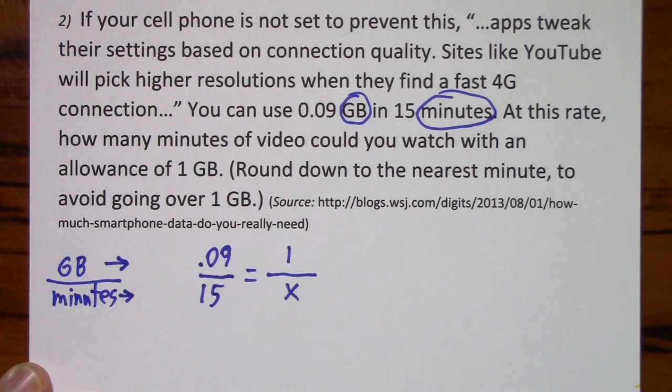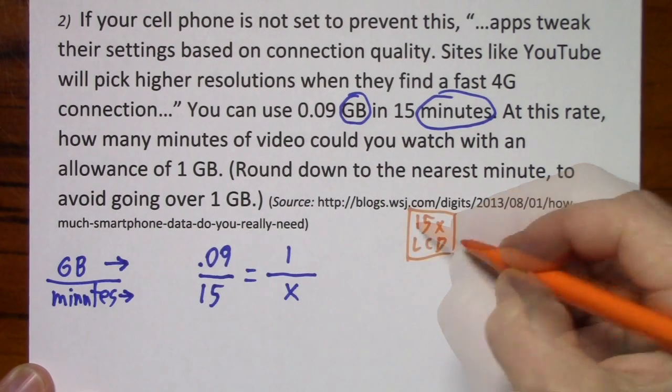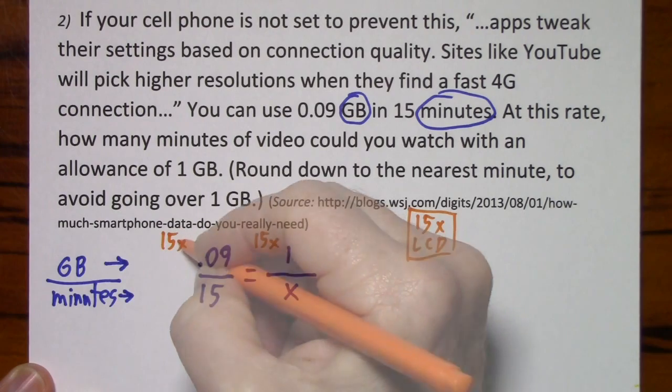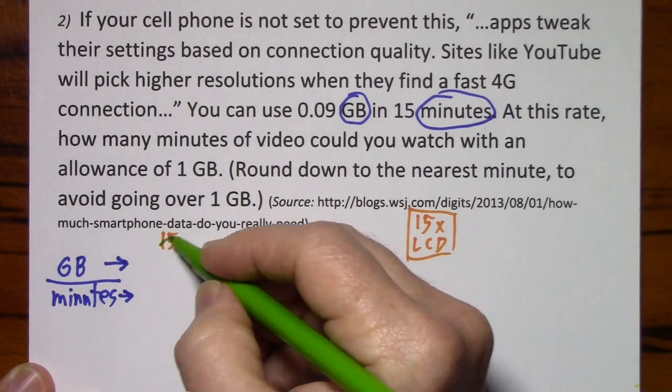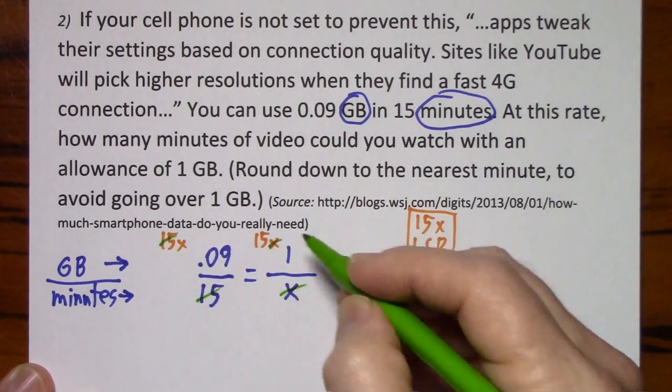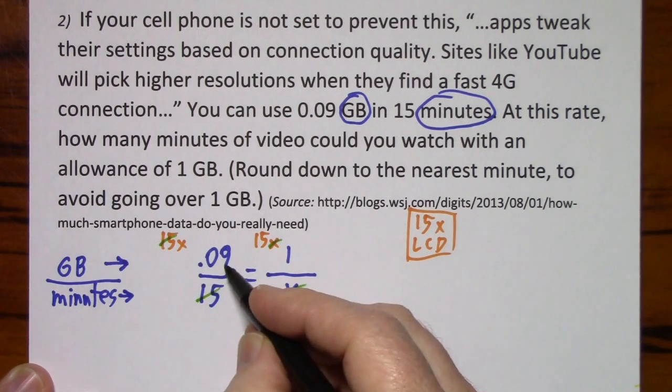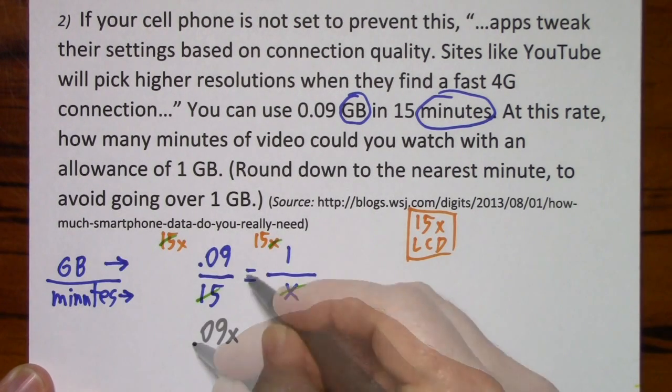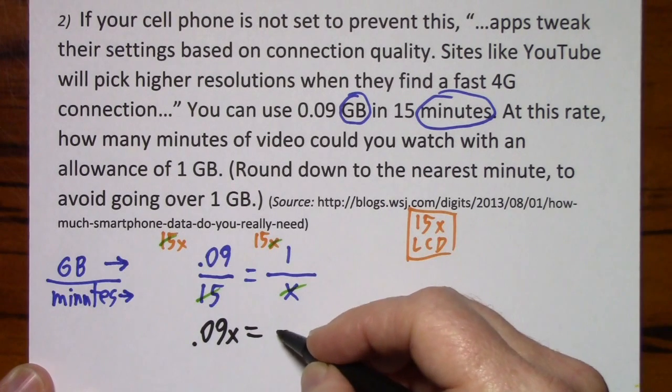Now all we have to do is solve for X. X is in the bottom, you've got to get it out from here. I could clean this up first, but generally with decimals I deal with them when I have to. So we're just going to clear this of fractions. The LCD is 15X. The 15's cancel, the X's cancel. We're left with 9 hundredths X is equal to 15 times 1.